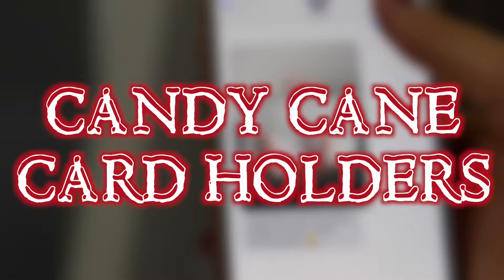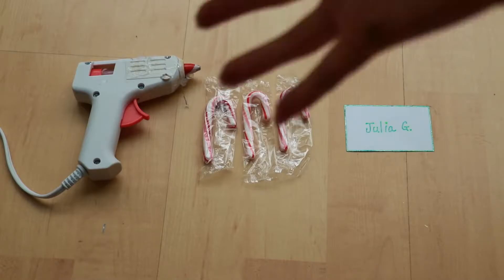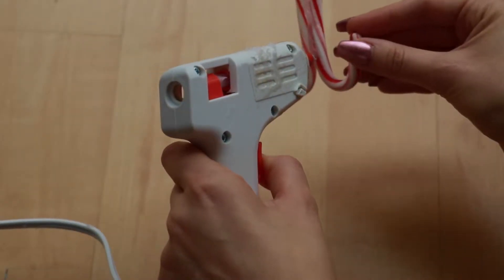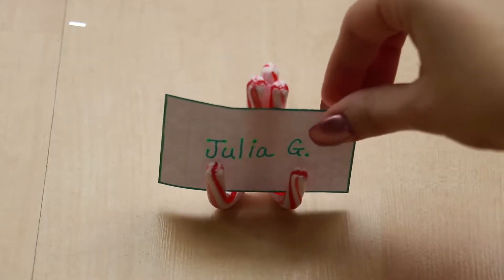Now onto the candy cane card holder. So you're going to need a hot glue gun, candy canes, and a card. So we're going to hot glue these mini candy canes together and then we're going to place a card, and that's it. I mean it's cute, but the water candle I made is way cuter.